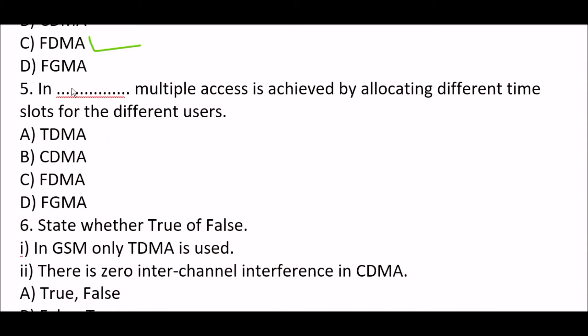Next question: In blank, multiple access is achieved by allocating different time slots for the different users. Option A: TDMA. Option B: CDMA. Option C: FDMA. Option D: FGMA. The right answer is Option A, TDMA. In TDMA, multiple access is achieved by allocating different time slots for the different users.